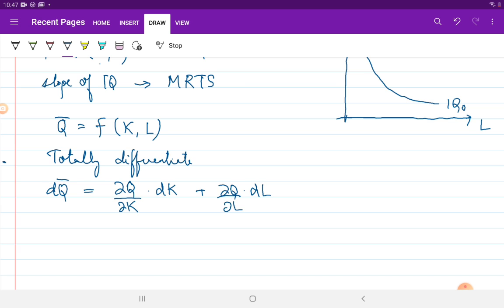And remember, in this case, we are moving from one point A, where you are employing L1 and K1 units of labor and capital, to point B, where you are employing L2 and K2 units of labor and capital respectively. But, as you move from point A to point B, as you are moving along the same iso-quant, the change in quantity will be 0.